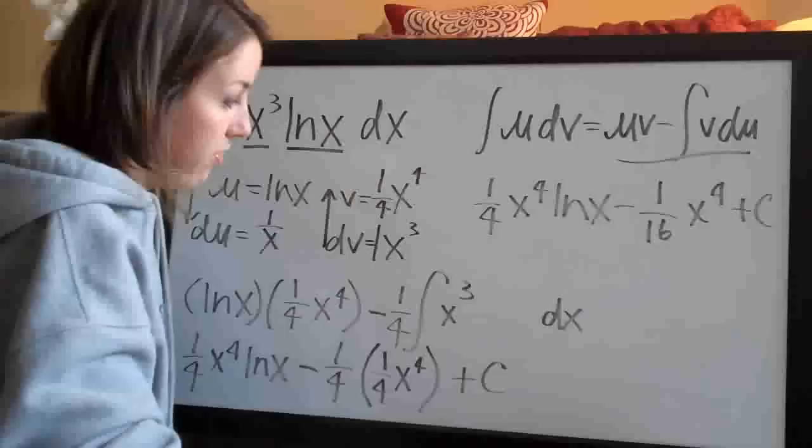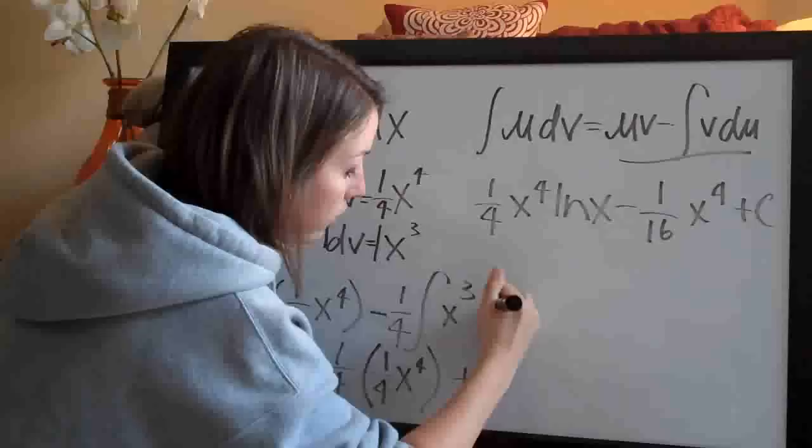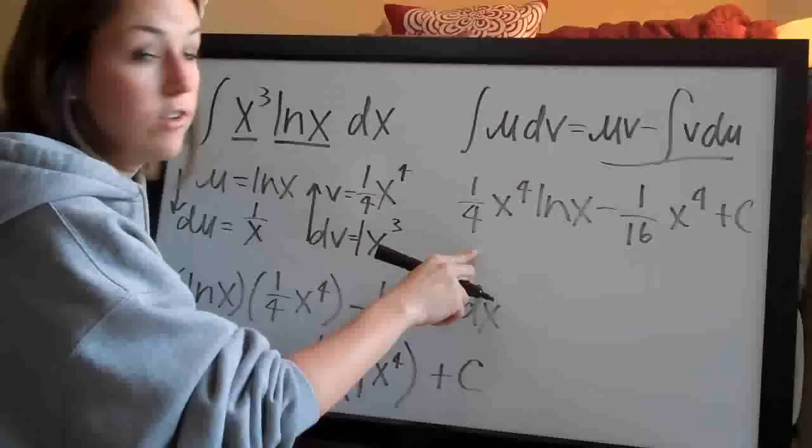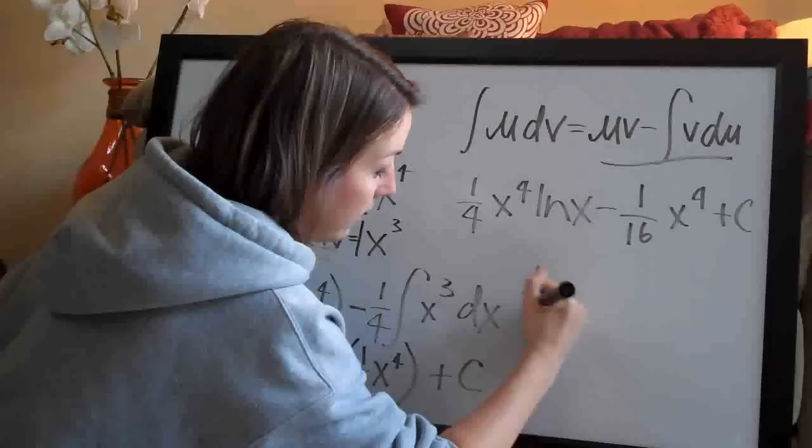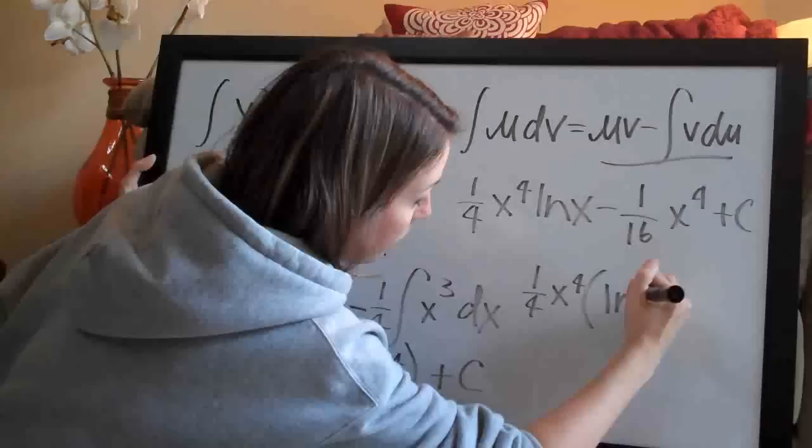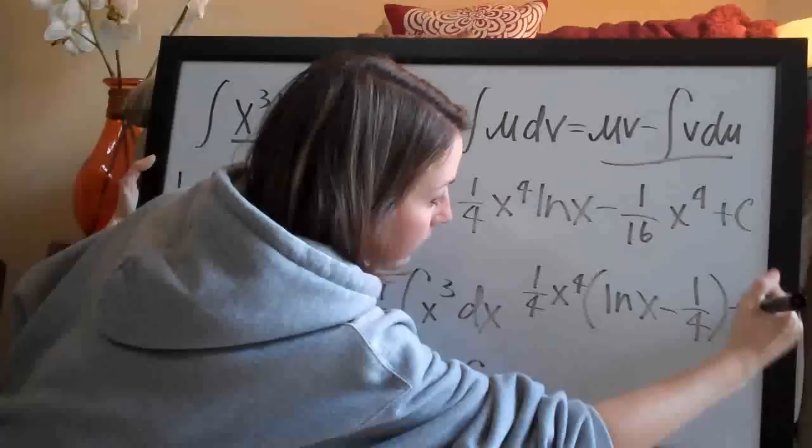So our final answer is one-fourth x to the fourth times natural log of x, minus one-sixteenth x to the fourth, plus c. As a quick note, if your professor asks you to factor, you can pull out one-fourth x to the fourth to get one-fourth x to the fourth times the quantity natural log of x minus one-fourth, plus c. Both forms are equivalent and correct.